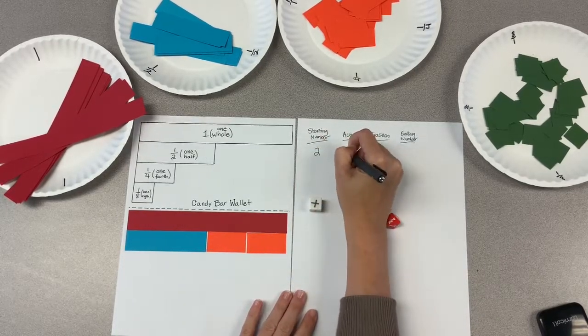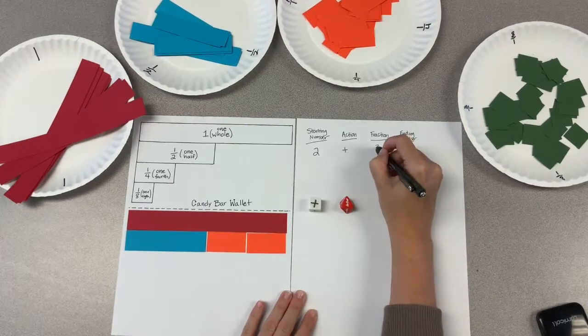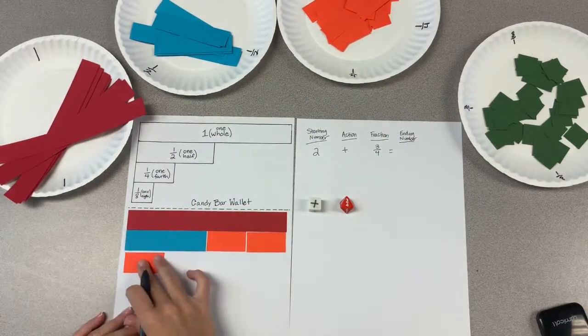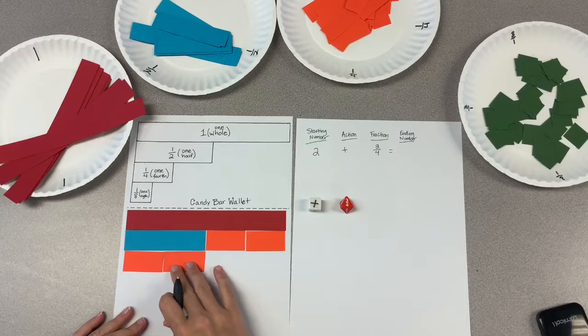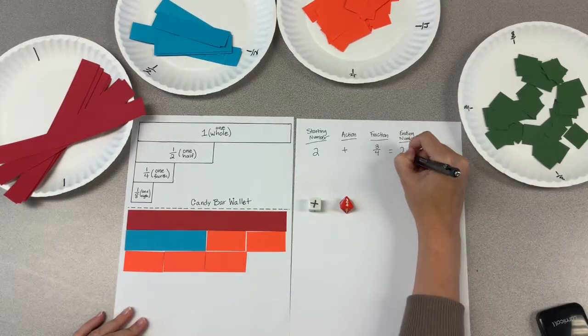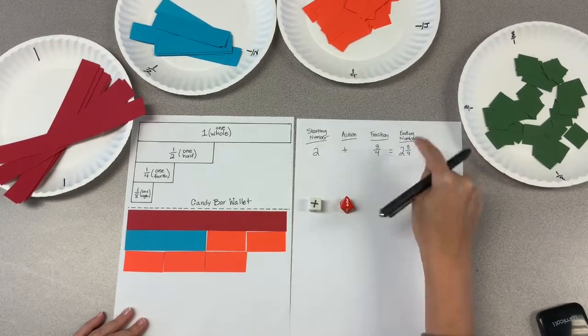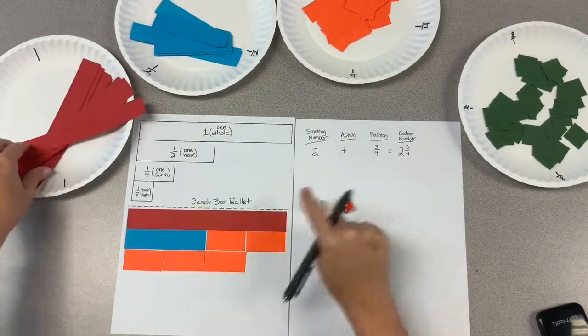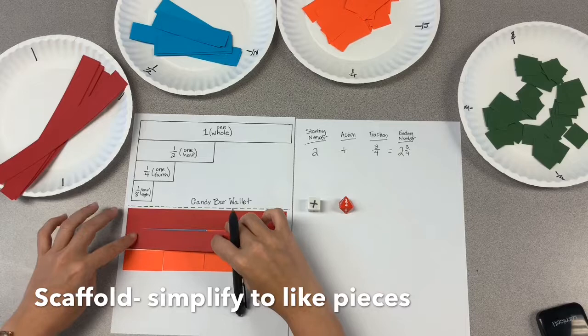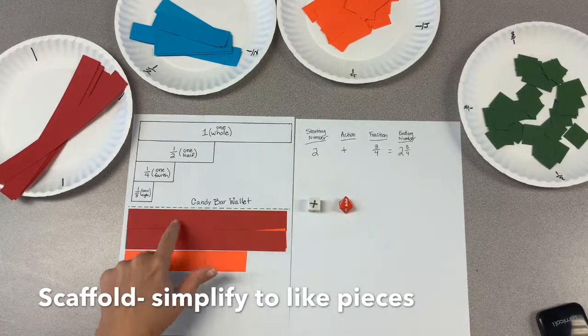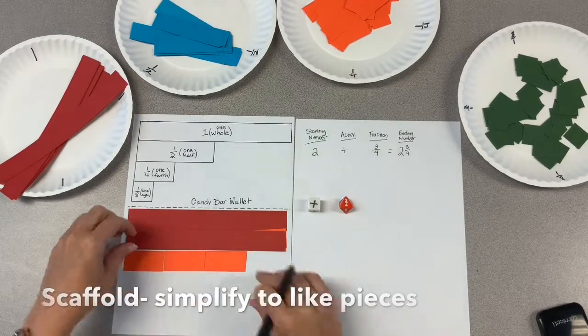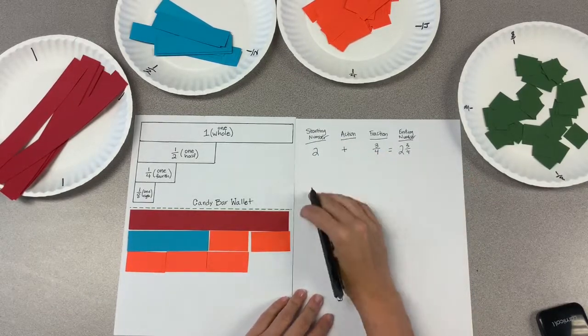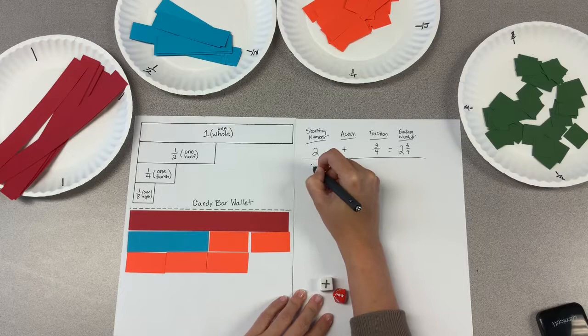I started with two. I'm going to add three fourths. I can very easily add three fourths pieces. And see that I now have two and three fourths. This is a great time to talk about mixed numbers and making sure it matches what we see.